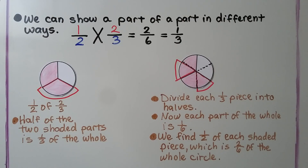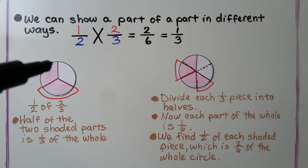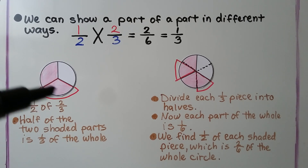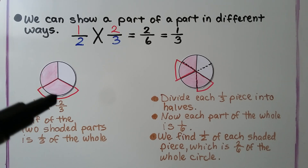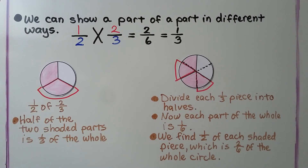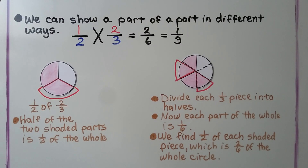We can show a part of a part in different ways. We have one-half times two-thirds. We shade in two-thirds of a circle, and half of the shaded part would be one of the thirds — one-third of the whole. So one-half times two-thirds equals one-third.